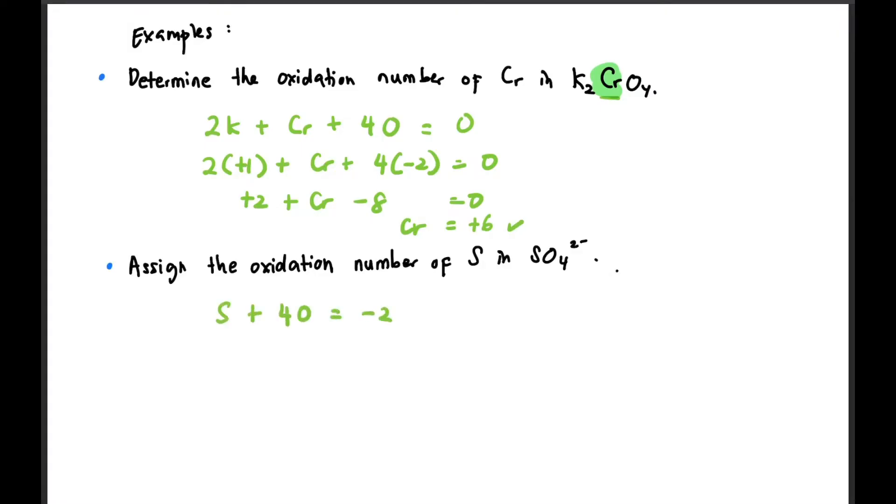While the second one, for sulfur in SO₄²⁻, we have S + 4 oxygen equals to -2. So S - 8 equals -2, therefore S equals +6. That's the oxidation number for sulfur. It's a reminder: it is compulsory to put the sign, positive or negative.